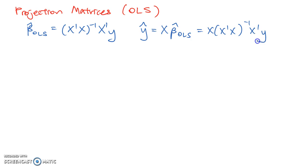We can define this as px, and then we have that y hat is equal to px times y. So the projected values of y are simply equal to the projection matrix times the original value of y.